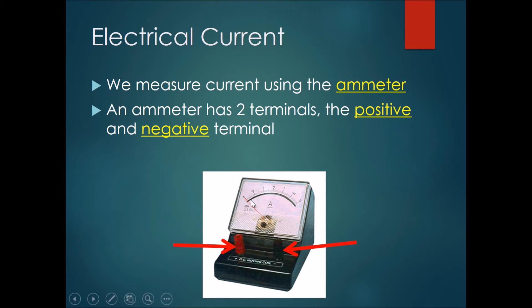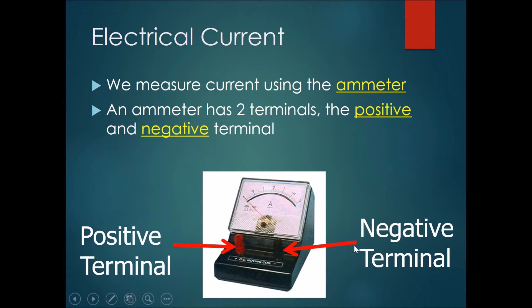Over here, this is the ammeter. You can see that there's a range here that tells you how much current is going through. Over here is the positive terminal. You can see in front of this connector there is a small plus sign, and in front of this terminal there is a small negative sign. This would be the negative terminal.